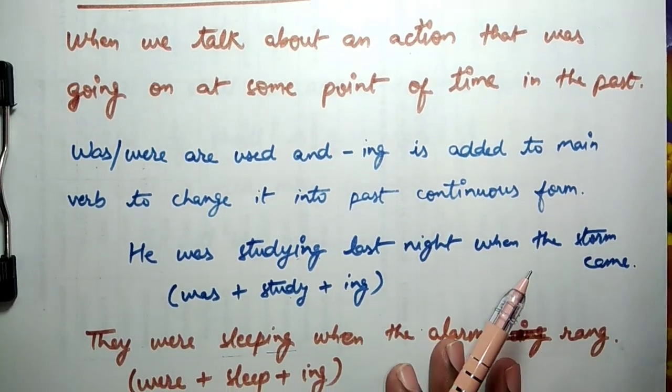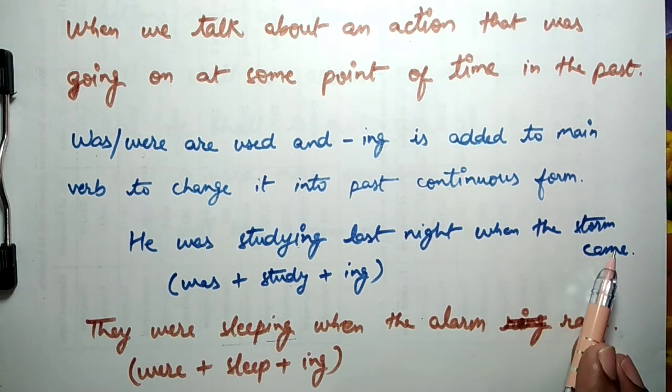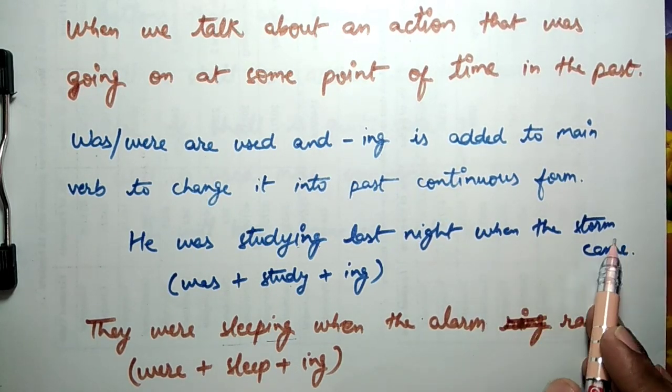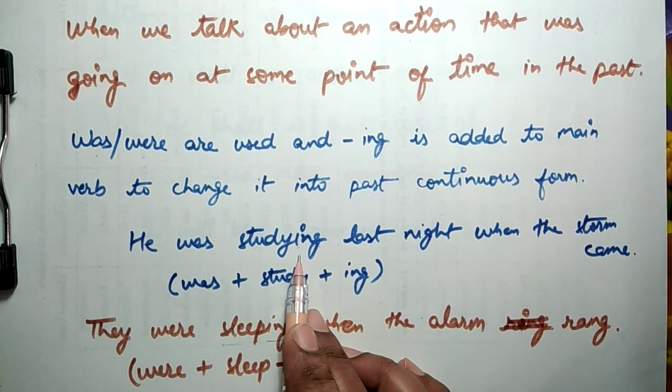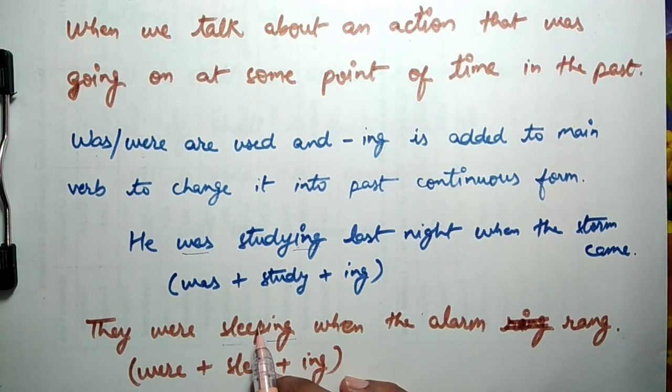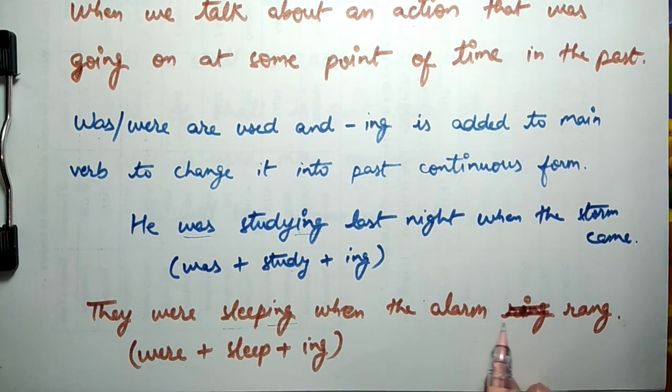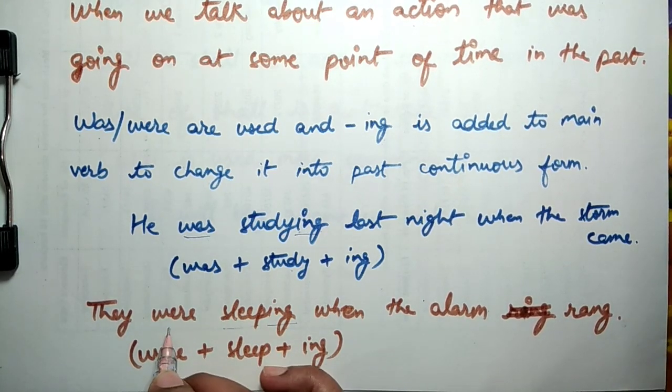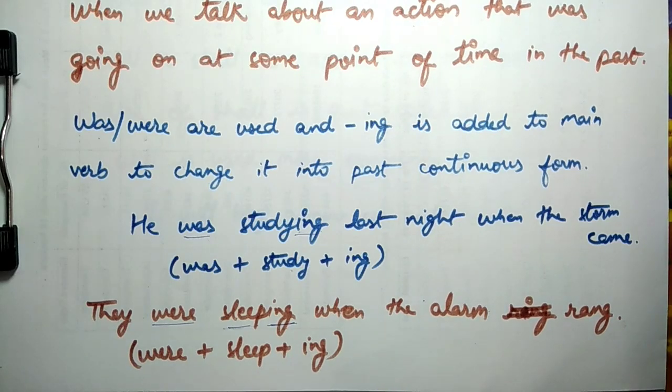Example is he was studying last night when the storm came. Woh padh raha tha jab toofan aaya. Yaha par hum baat kar rahe hain jab toofan aaya tha tab ki, to us samay par wo bachcha ya insaan padh raha tha. Isliye yahan par past continuous tense ka istemal hua hai. To yahan was ka istemal hua aur ing verb me jod diya gaya hai. Second example is they were sleeping when the alarm rang. Yani ki jab alarm baj raha tha tab wo so rahe the. Yahan par were ka istemal hua hai aur verb ke piche ing jod diya gaya hai. Is prakar past continuous tense me sentence bole aur likhe jaate hain.